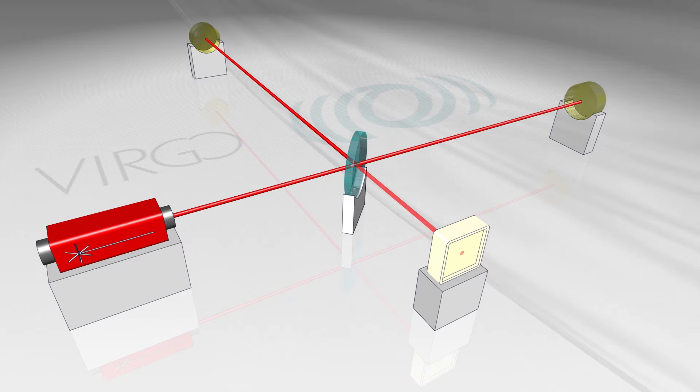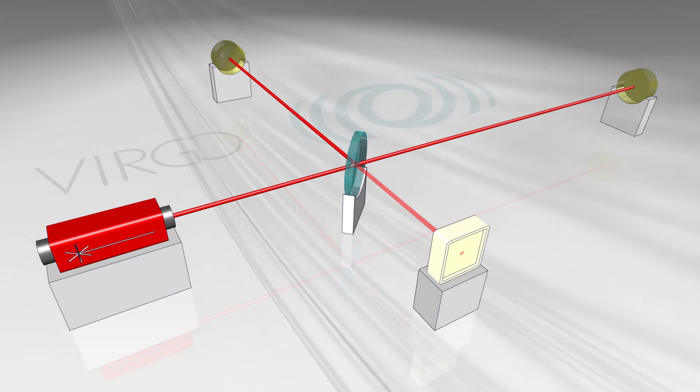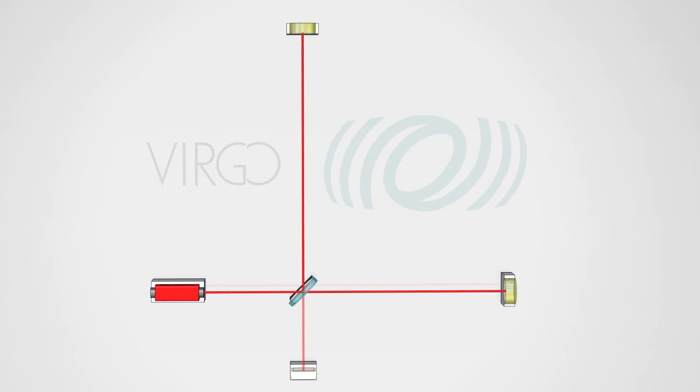A passing gravitational wave distorts space, making one arm slightly shorter and the other arm a little longer. The light waves do not cancel each other anymore, and we now measure a tiny signal in the detector.